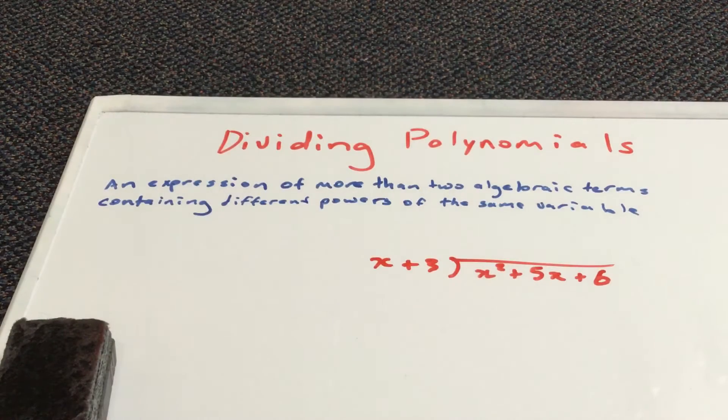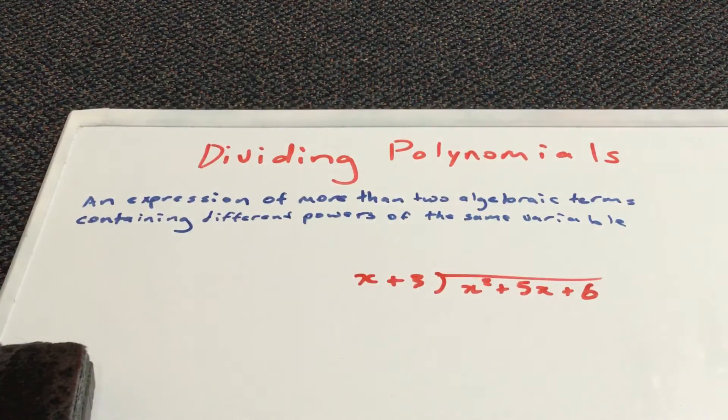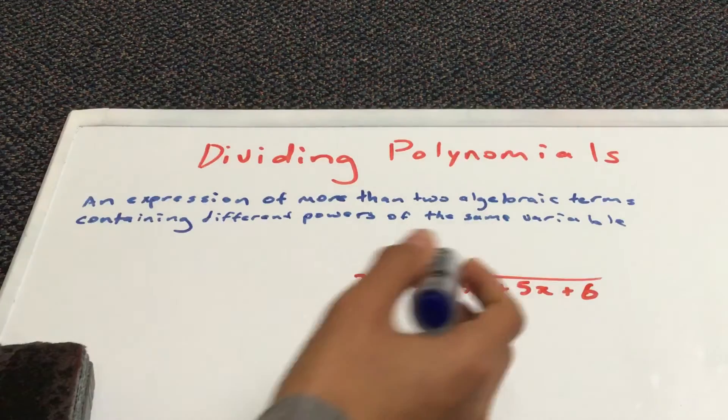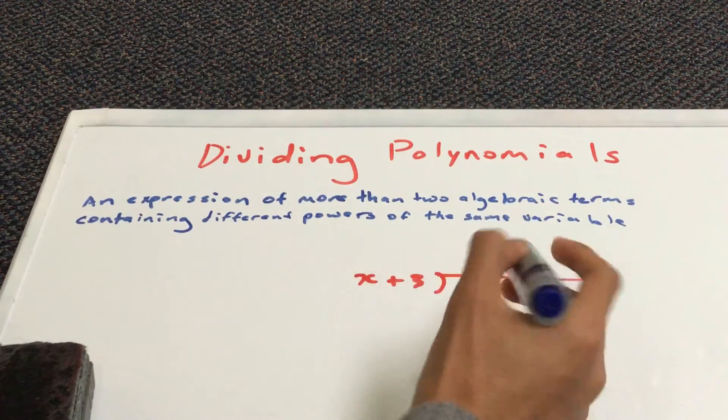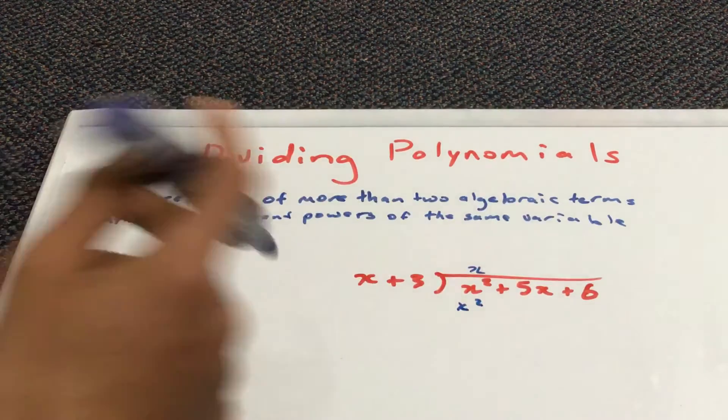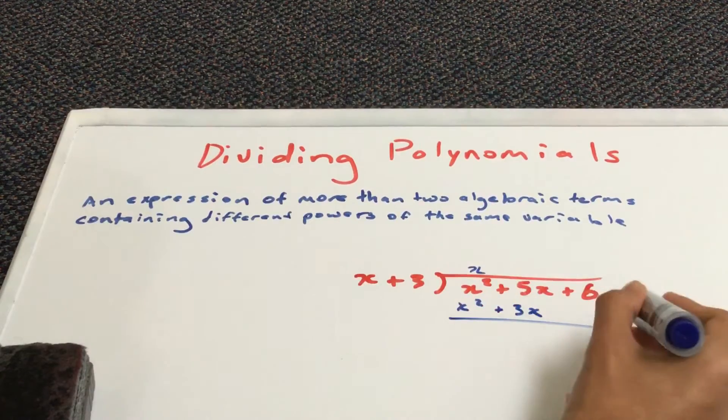And how do we do this? So, x squared divided by x, you should get a result of x. And then, you multiply x times by x. So, you get x squared. And now, you go x times 3, which is 3x. And then, you subtract.